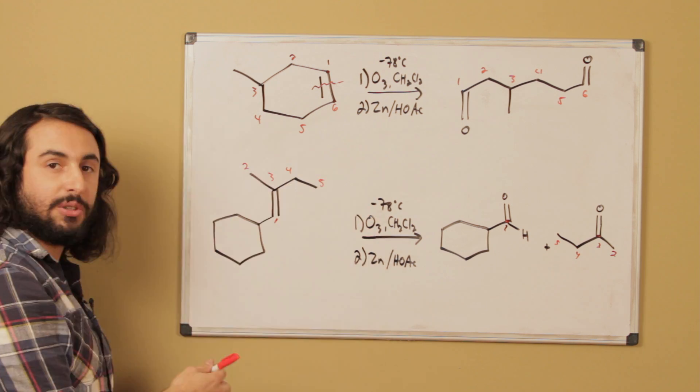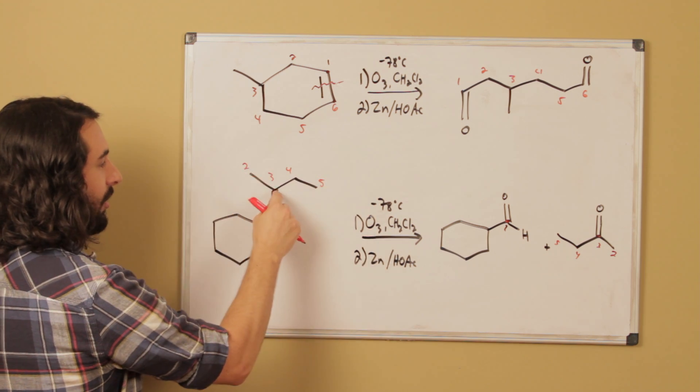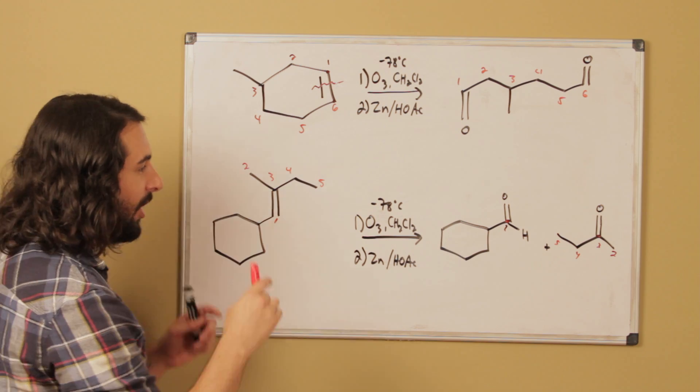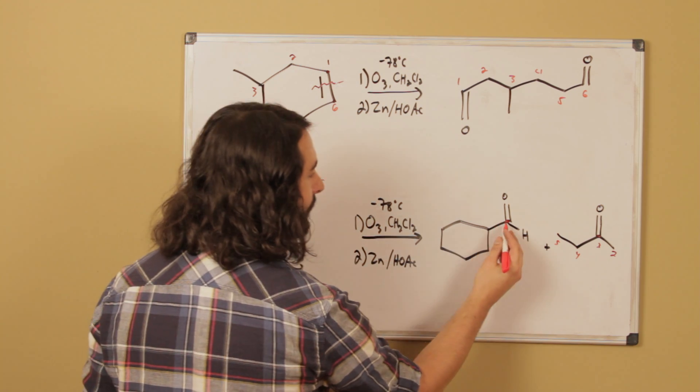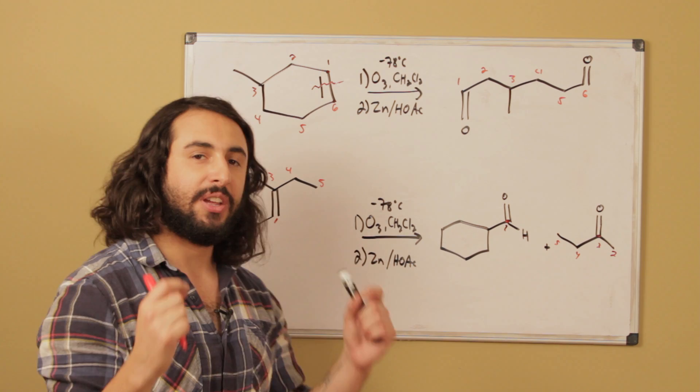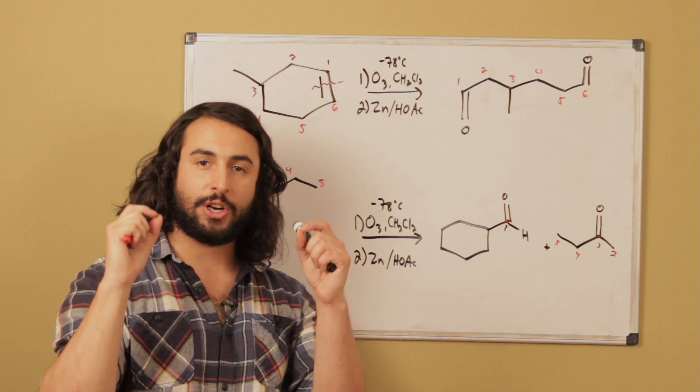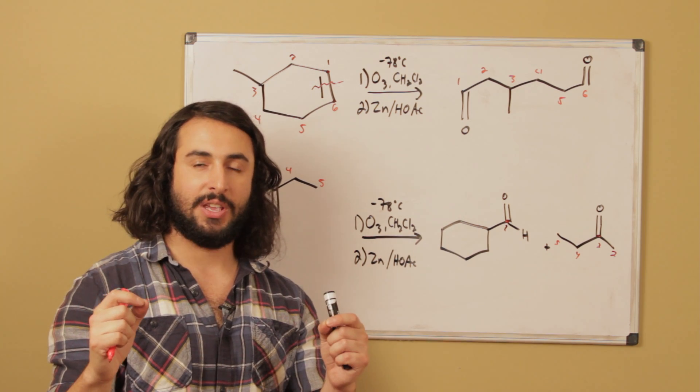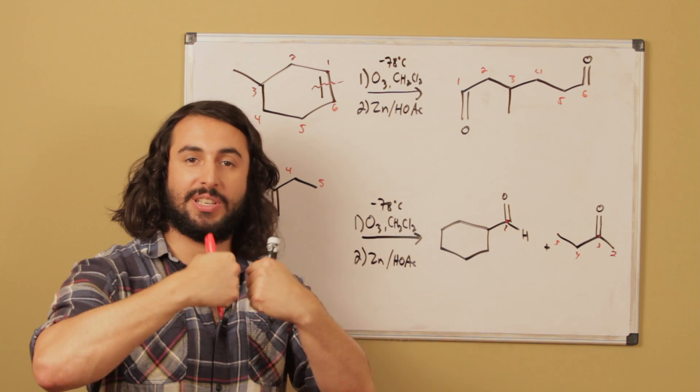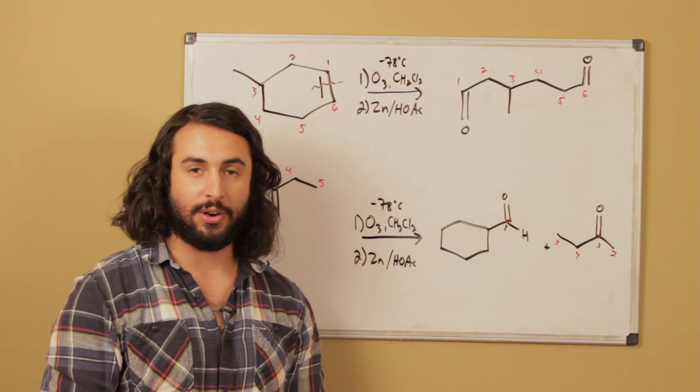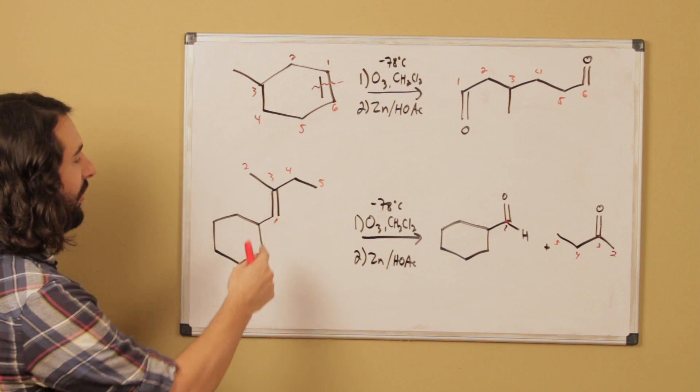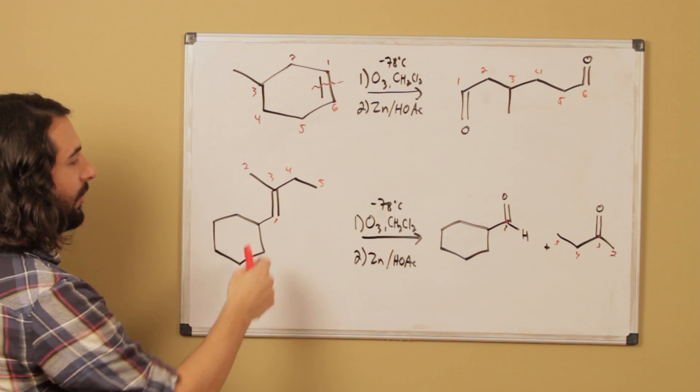5. Now this is somewhat arbitrary, we could have drawn that in the other direction with the methyl there and the ethyl there. But the point is that carbon 1 and carbon 3, because carbons 1 and 3 are the carbonyl carbons in the product, then those must have been the carbons that were participating in a double bond with one another in the reactant. So that's why the double bond has to be between those carbons.